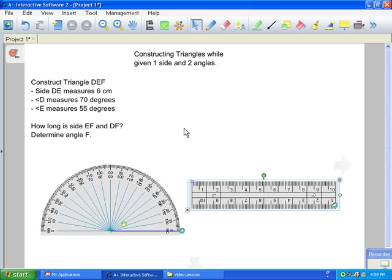You're given one side, and side DE measures 6 centimeters. Angle D is going to measure 70 degrees, and angle E is going to measure 55 degrees. We're going to be determining how long side EF is and DF, and you're also going to determine angle F. So you're trying to solve for the unknown.